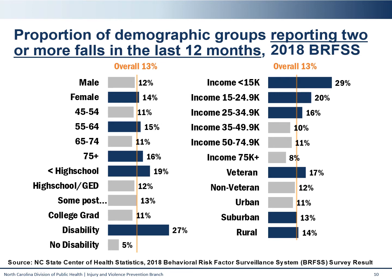There were some disparities among demographic groups, and the blue bars indicate a group that had a proportion higher than the overall average. As you can see, the proportion having experienced these falls was higher among women, older adults, those with less than a high school education, those with a disability, those with lower income, and veterans.